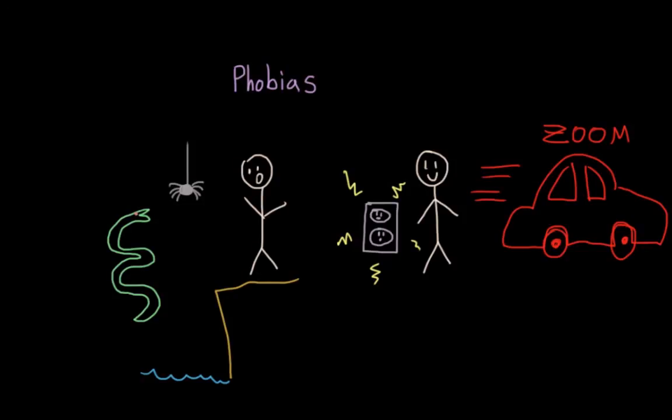But learning to avoid things like snakes and spiders would have conferred an evolutionary advantage to your ancestors. In much the same way that it would have been adaptive to learn to avoid foods that made you sick. But compared to snakes and spiders, cars are still very new. So new that even though they are actually a threat, there is no biological predisposition to avoid them.